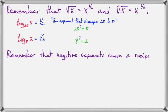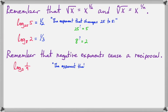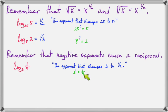Now let's remember that negative exponents create a reciprocal. A negative makes an expression flip over, or do a reciprocal. So log base 3 of 1/9 means we're looking for the exponent that changes 3 into 1/9. In exponent form, 3 to some power equals 1/9. This power has to do two things: it has to change 3 into 9, and it also has to do a reciprocal. What power changes 3 to 9? That would be 2. What power does a reciprocal? That would be negative 1. So our log here is negative 2 — negative to do the reciprocal, and 2 to change 3 into 9.